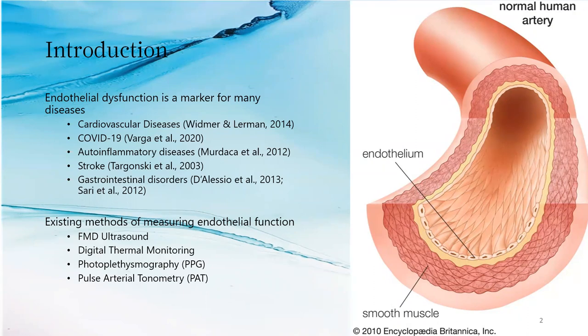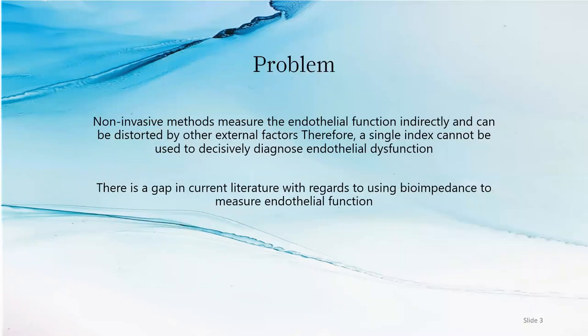There are several different methods of measuring endothelial function. One method includes taking an ultrasound scan of your arm and measuring the change in diameter. Other methods involve taking your body temperature or your PPG, which is the reading of your blood oxygen levels. The problem is that these methods are affected a lot by external factors. So if you are taking medication or if you are on a period, then these test results might not be correct.